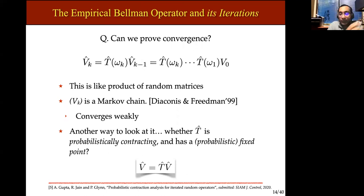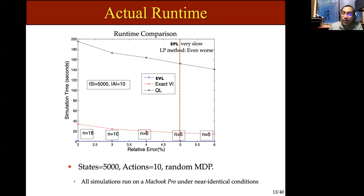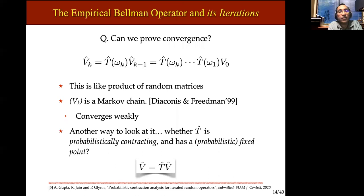So hopefully this is convincing that something interesting is happening here. This raises the question of what exactly is going on — can we prove convergence? One way to look at it is that in the empirical variant of value iteration, we start with V-naught and apply a random operator T-hat iteratively. The k-th iterate is the random operator iterated K times applied to V-naught, except each time an independent instance of the random operator is used. This is reminiscent of products of random matrices, but these are not linear operators.